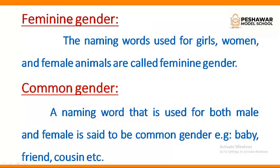Then there is feminine gender. The naming words — again, noun — the naming words used for girls, women, and female animals are called feminine gender. Girls, women, female animals — these are nouns, and the word which is used for them is feminine.